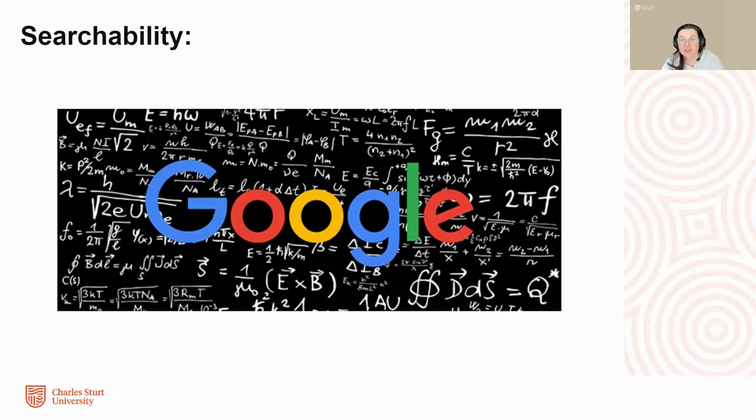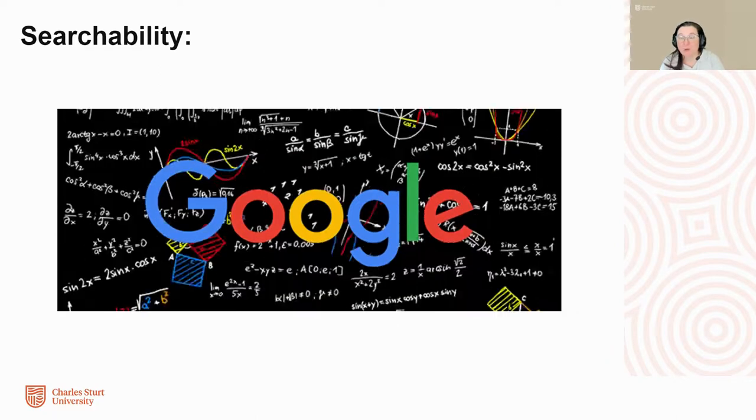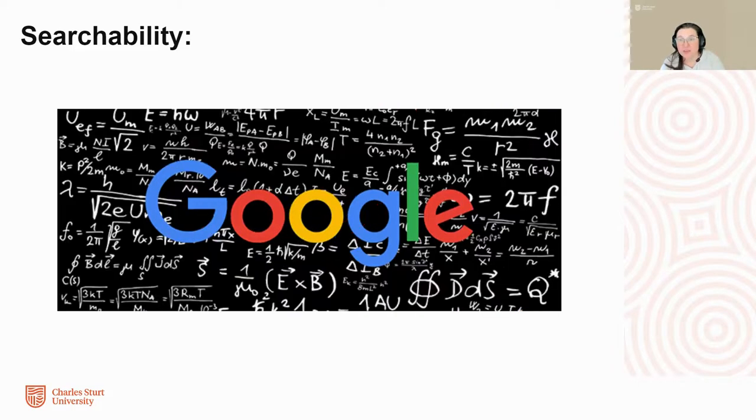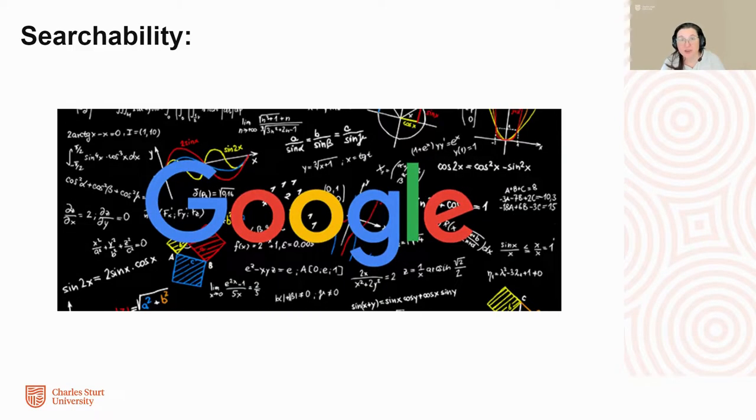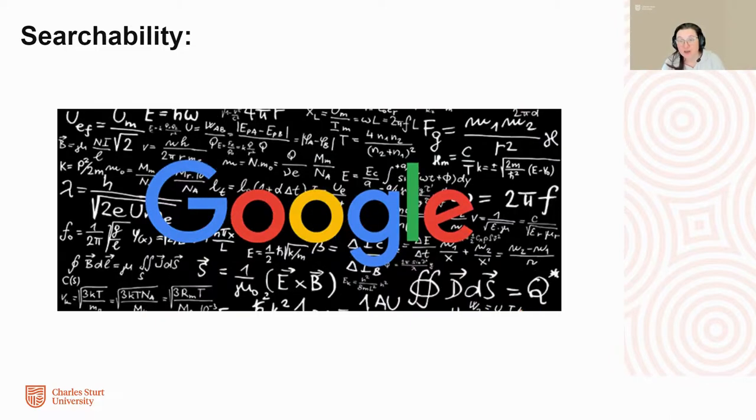As Google continues to refine its algorithm searching, it becomes easier and yet more challenging to navigate digital information. While it is easy to find an answer, it can be difficult to find the right answer. This is where the TL's role is vitally important.